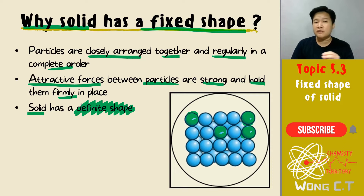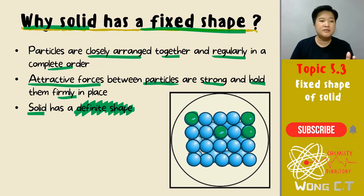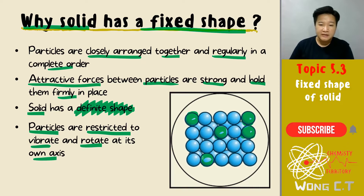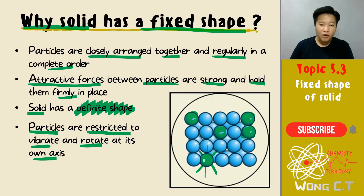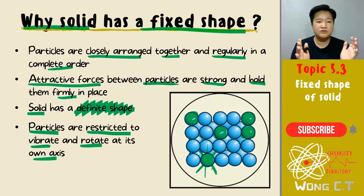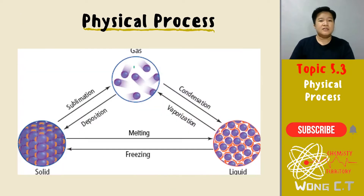The shape of the solid will not change regardless of the shape of the container — that is what makes solid different from liquid. The solid particles are also restricted to only vibrate and rotate at their own axis. So if a solid particle is sitting at a position, it can only rotate and vibrate on that particular axis. That is why solids have a fixed shape.